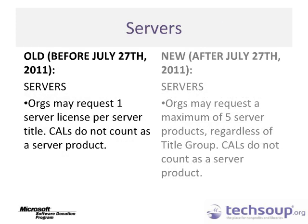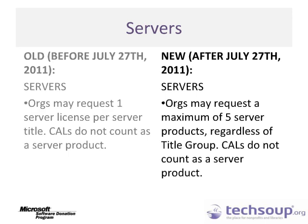Server requests are also affected. Before July 27, 2011, organizations could request one server license per server title. As a result of the program updates, after July 27, 2011, organizations may request a maximum of five server products regardless of title group. Please note that Client Access Licenses, or CALs, do not count as a server product as they are part of their own title group.